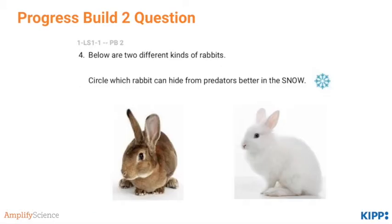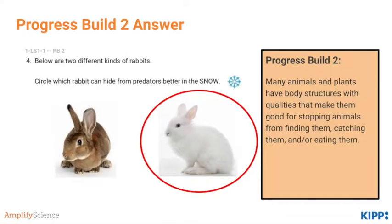This next question assesses Progress Build 2 — pause and do the question. The answer is the white rabbit. Students need to think about how the color of the rabbit's fur will enable it to blend in and hide better in a white background environment, such as snow.